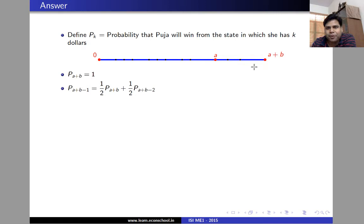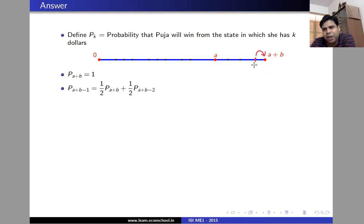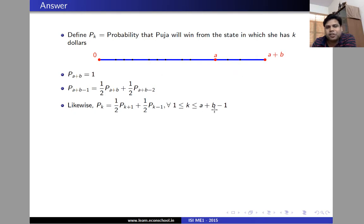If we go back one step and evaluate the probability she wins starting from state A plus B minus one, that probability is one-half times P(A+B) plus one-half times P(A+B-2), because from state A plus B minus one she moves to A plus B with probability one-half, or to A plus B minus two with probability one-half. This reasoning applies to any state K between one and A plus B minus one, giving us P_K equals one-half P(K+1) plus one-half P(K-1) for all K.